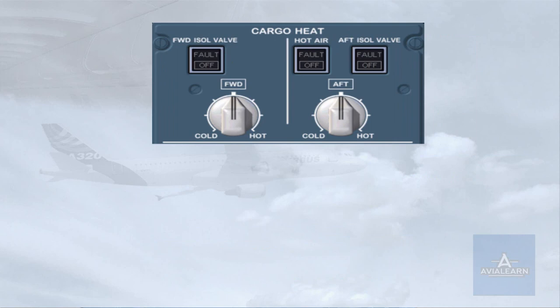The normal operation of the cargo conditioning system only requires the following pilot inputs: confirm that the push-button switches are in their normal lights-out position, and set the required temperatures. Note that the mid-position of the temperature selector is approximately 16 degrees Celsius.